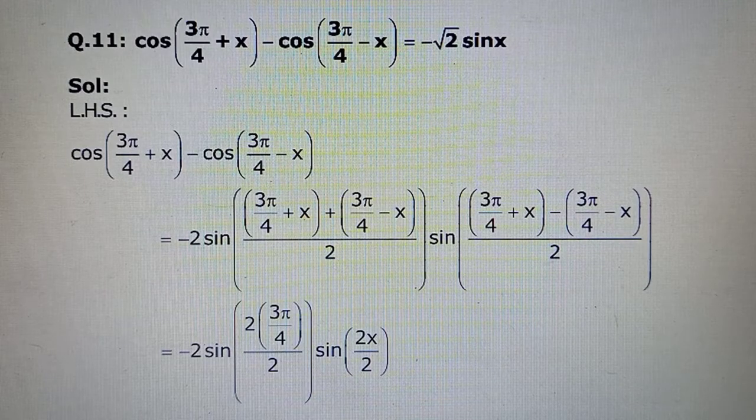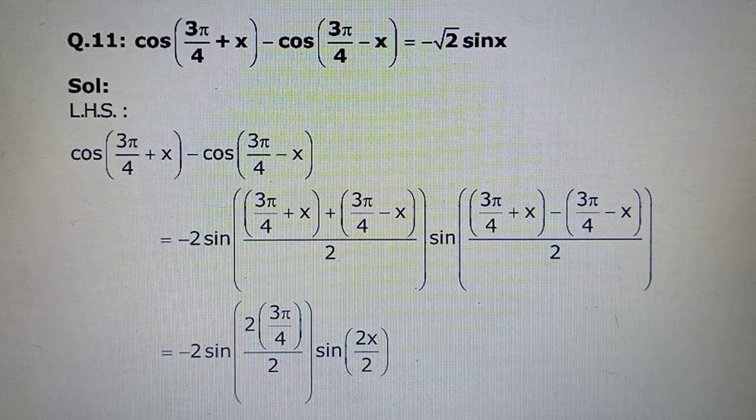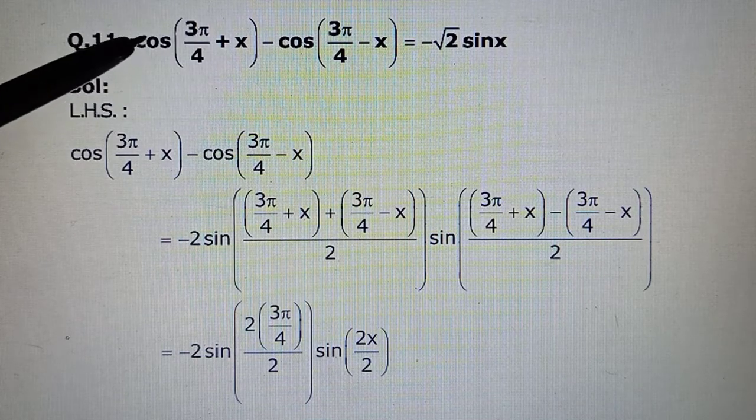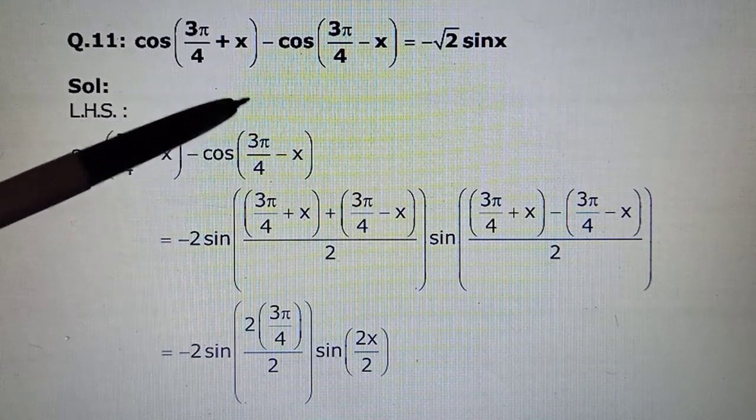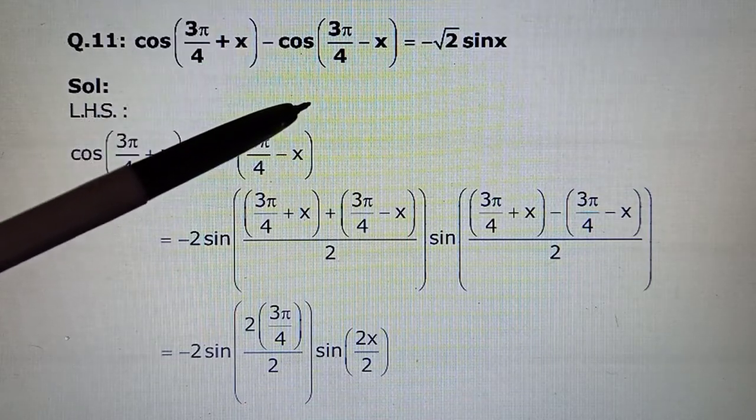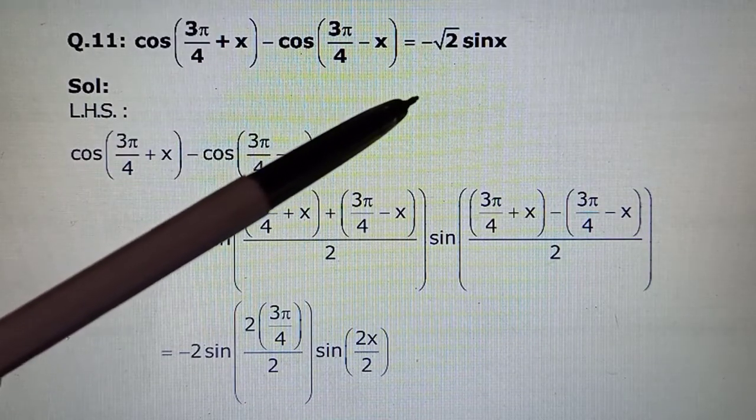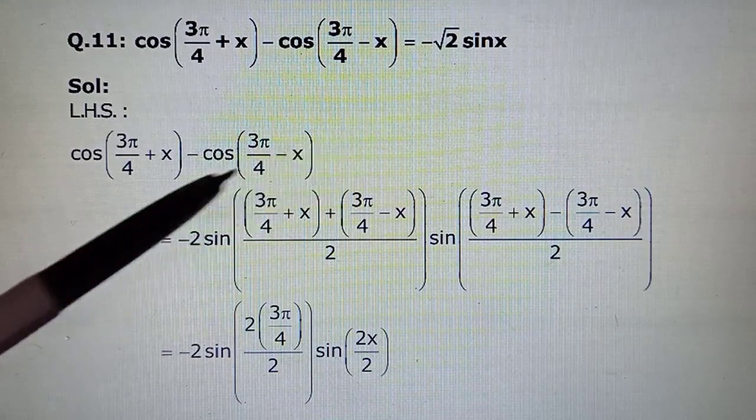This is Class 11 explanation of the remaining questions from exercise 3.3. For this proof we have to show that cos(3π/4 + x) - cos(3π/4 - x) will come out to be -√2 sin x.